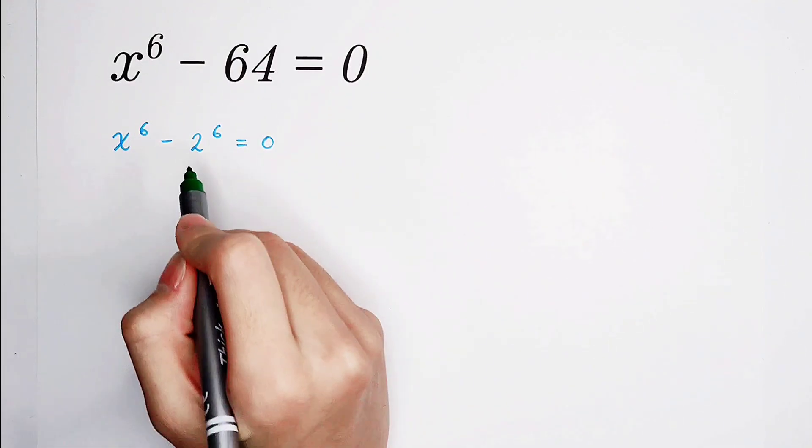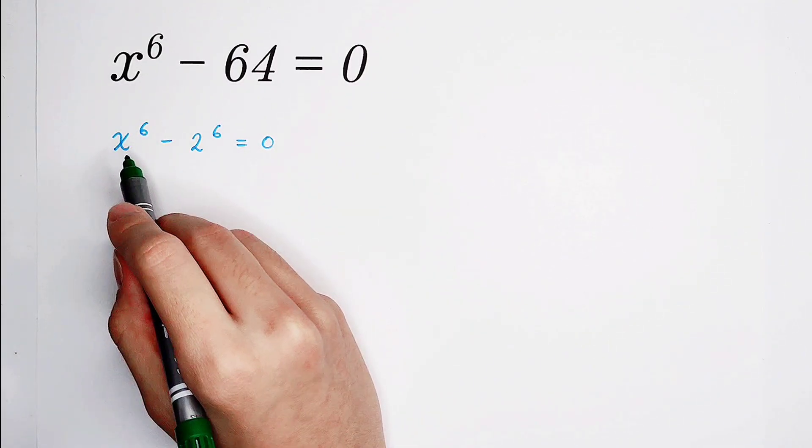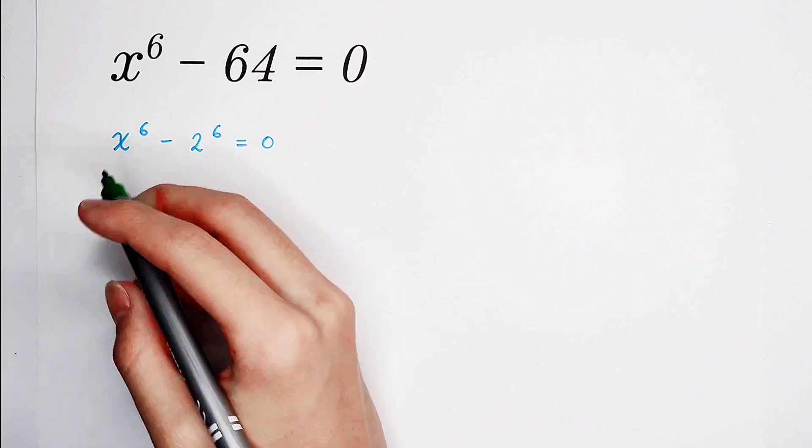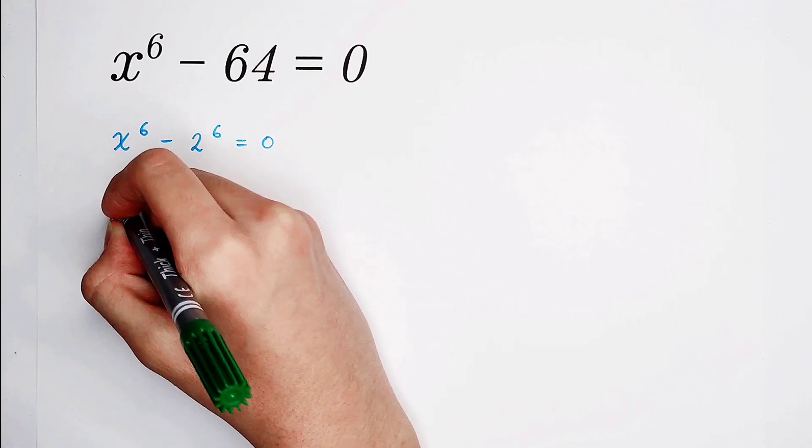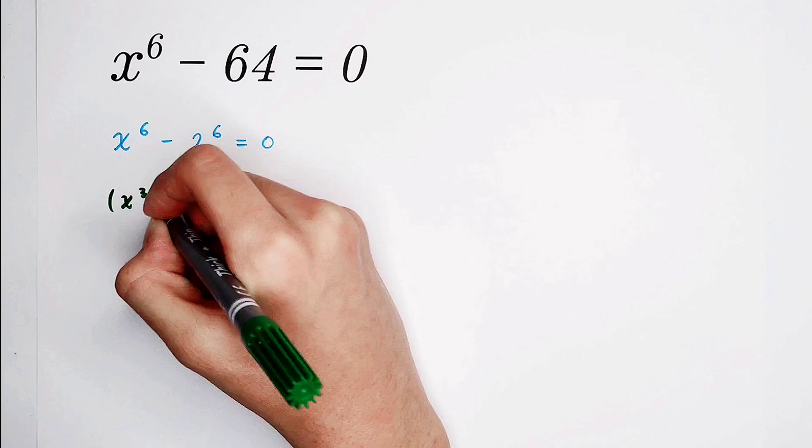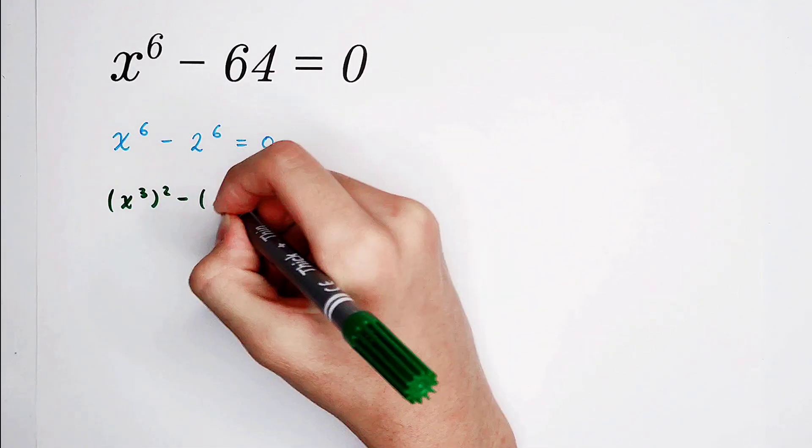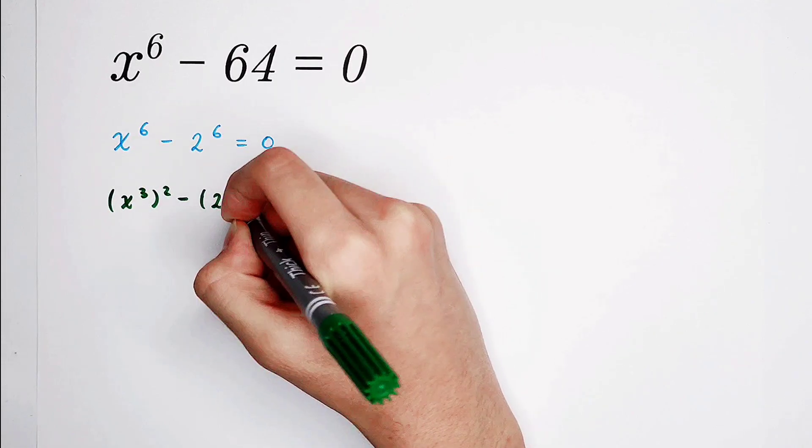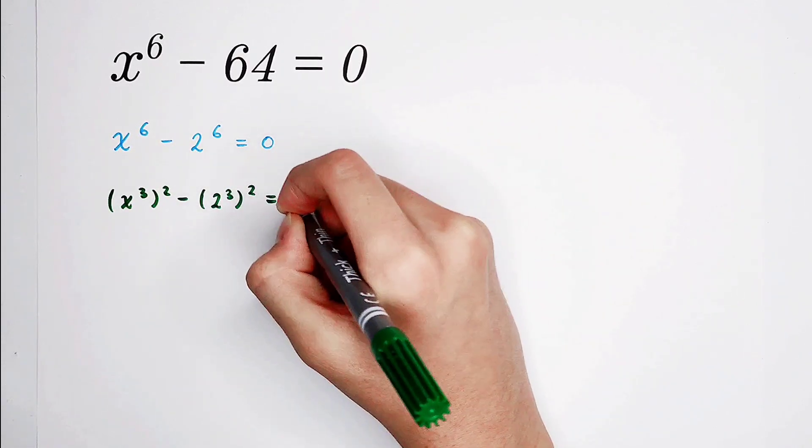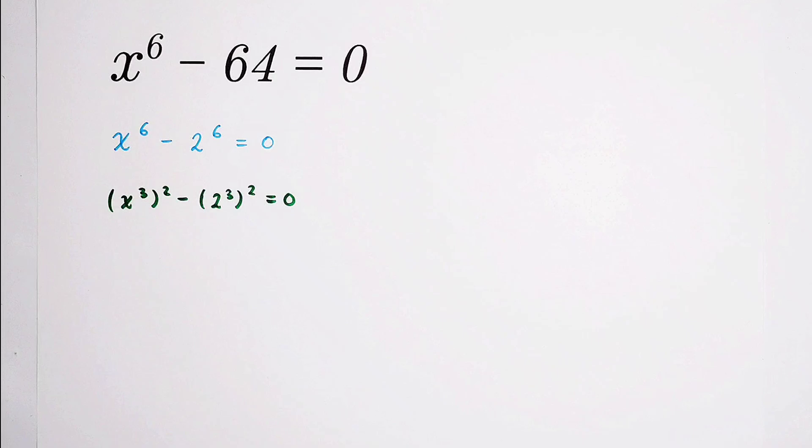x to the power of 6, 2 to the power of 6. 6 is 2 times 3. So x to the power of 6 can be written as x cubed squared, and 2 to the power of 6 is 2 cubed squared.